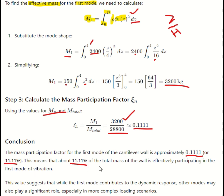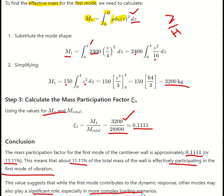This means that 11.11% of the total mass of the wall is effectively participating in the first mode of vibration. This value indicates that the first mode contributes to the dynamic response, but other modes may also play a significant role, especially in more complex loading scenarios.